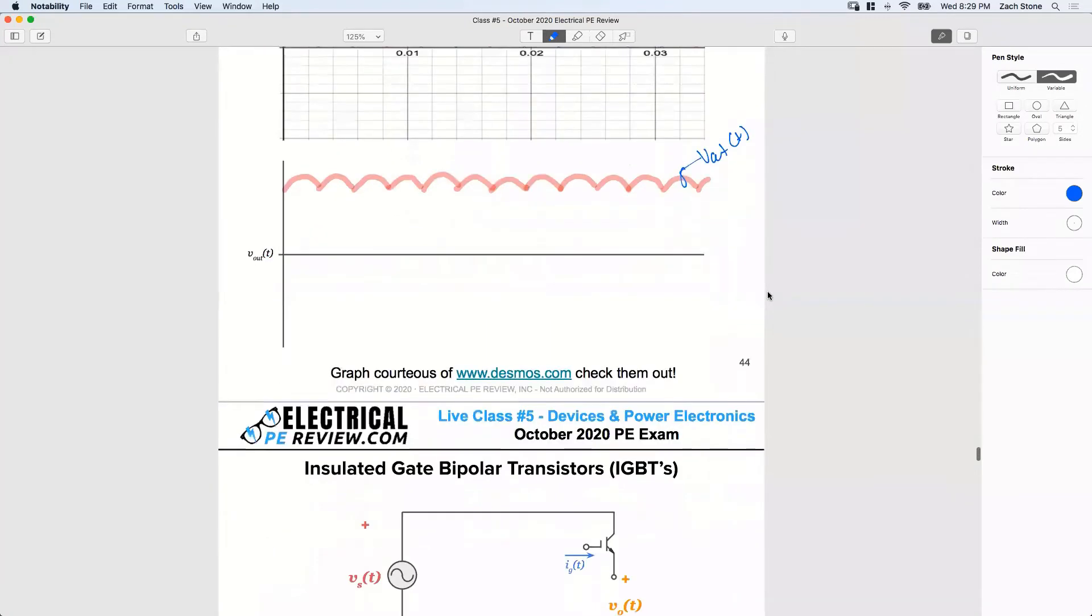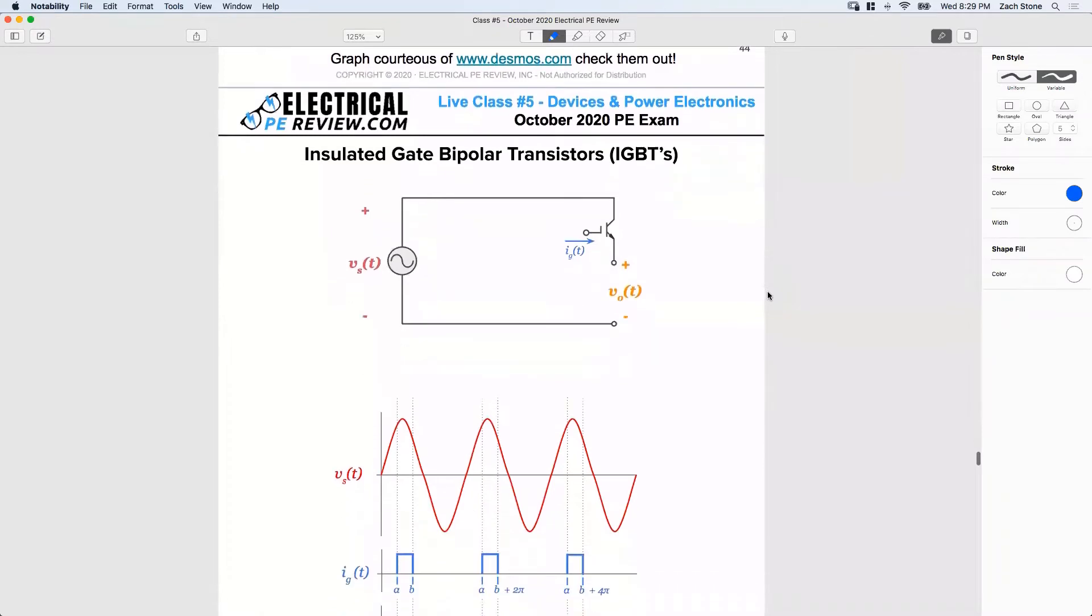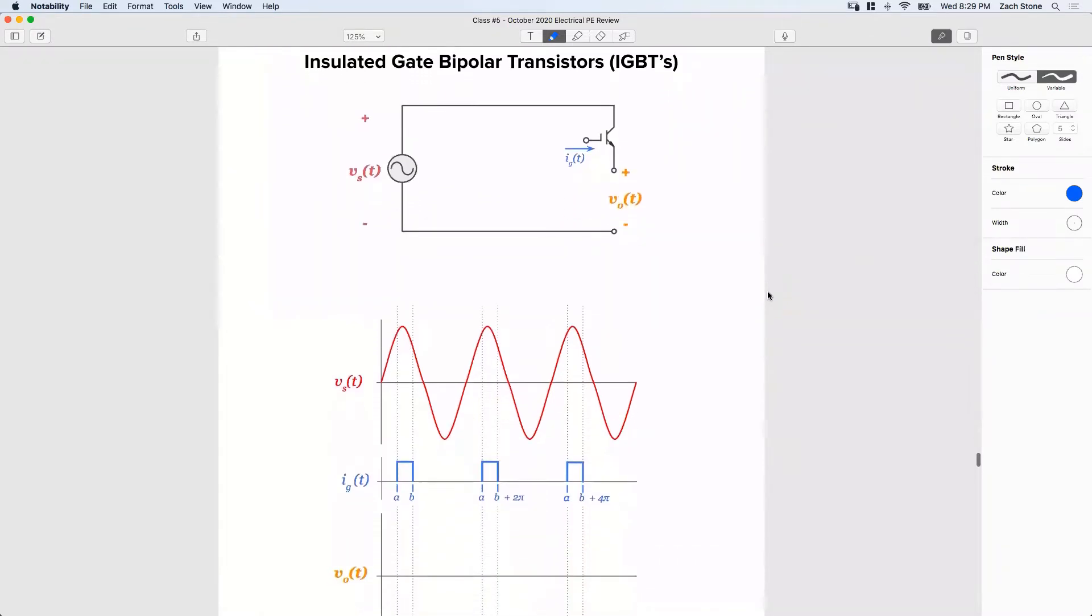All right, let's look at IGBTs. We'll look at how they're controlled. Very similar to a thyristor, except what? Who can tell me? What's the difference between an IGBT and a thyristor, or what do they have in common?